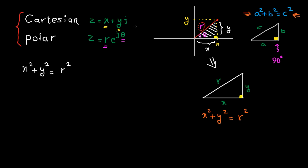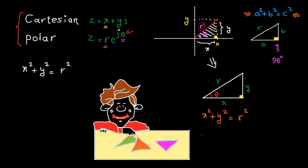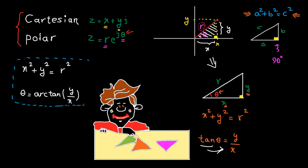Now let's find the relation between x, y and theta. From trigonometry, we know that tangent is opposite divided by adjacent, i.e. y divided by x. By applying tangent inverse, we get theta is equal to arctangent of y divided by x.